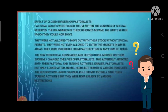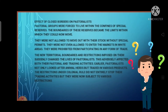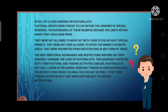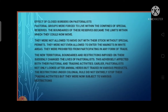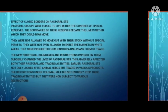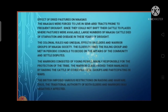Early pastoralists not only looked after animal herds but also traded in various products — animals, skin, wool, milk, ghee, and woolen products were all sold in the market. The restrictions under colonial rule did not completely stop their trading activities, but they were now subject to various restrictions. The pastoral community had to face increasing pressure as their land dried up.